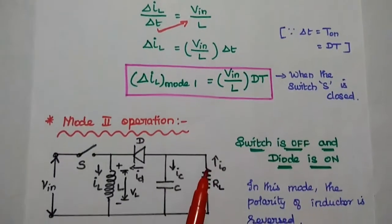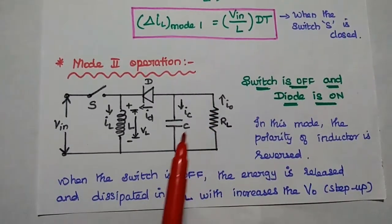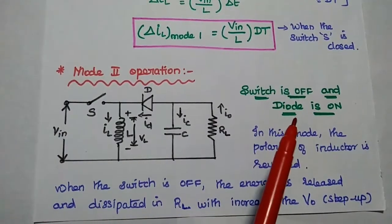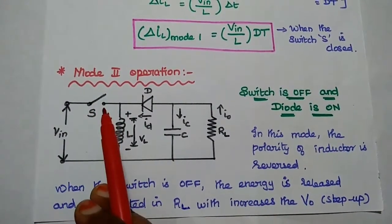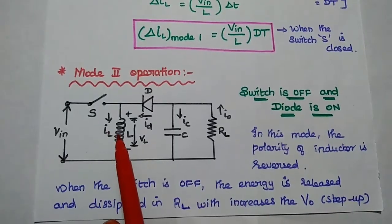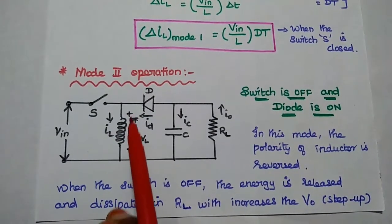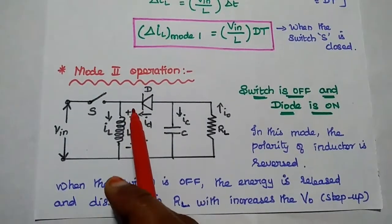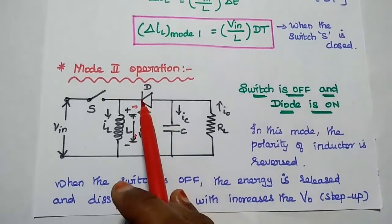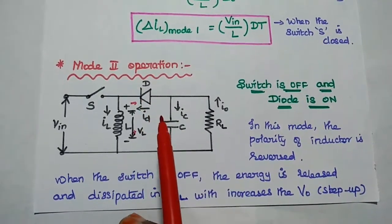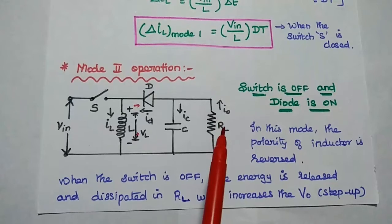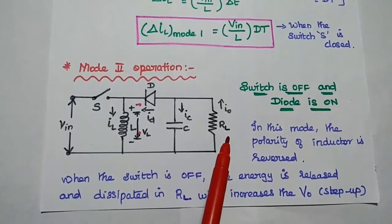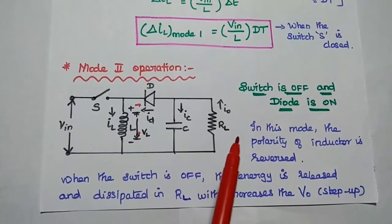Similarly, we find the inductor current for Mode 2. In Mode 2 operation, the switch is OFF and the diode is ON. When the switch is OFF, the inductor starts releasing energy in the reverse direction; the current polarities are reversed. Since the current is reversed, the diode becomes forward biased and turns ON, and it starts conducting. This energy is then dissipated across the load resistor, increasing the output voltage.